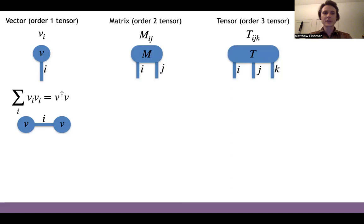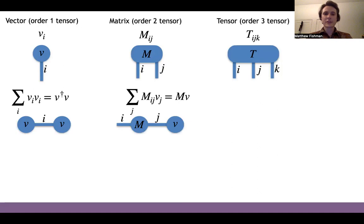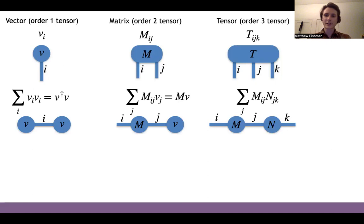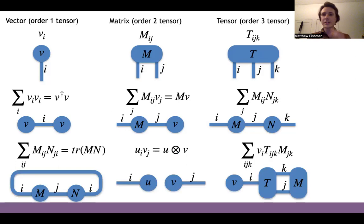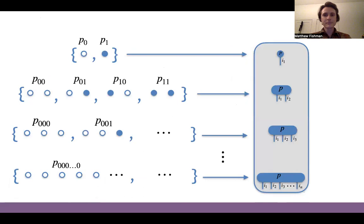A vector inner product is connecting the edges of two order-one tensors. A matrix-vector multiplication is contracting an order-two tensor with an order-one tensor, and a matrix-matrix multiplication is contracting two order-two tensors. We can also represent more complicated operations like the trace of two matrices, the outer product of vectors, and more complicated tensor network diagrams, which we will encounter as we go along in this talk.